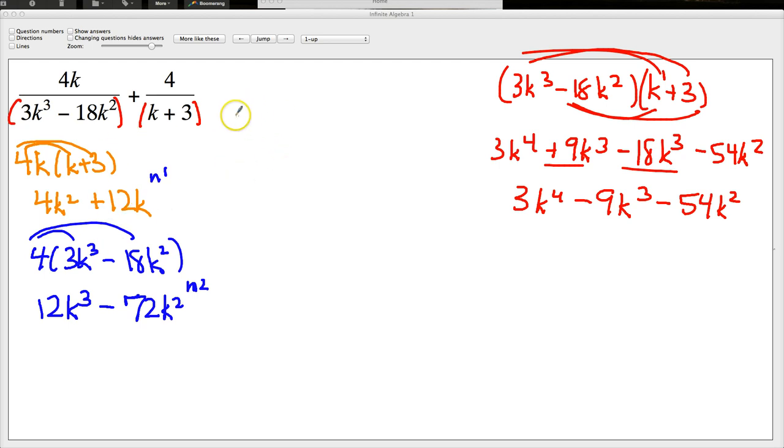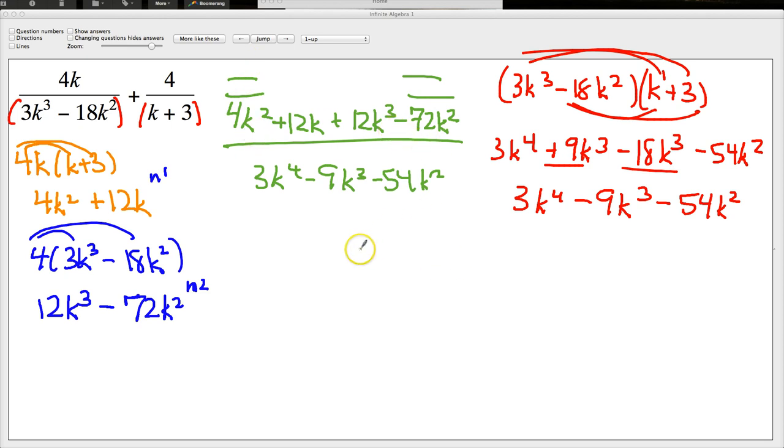And this is my denominator. So I'm going to put it all together here in the middle. And since it's an addition problem, I'll just do 4k squared plus 12k plus 12k to the 3rd minus 72k squared. It's a beast. 3k to the 4th minus 9k to the 3rd minus 54k squared. So I just need to see in the numerator, is there anything that combines? Are there any like terms? And there are. I tend to put two lines if it's a squared and three lines if it's a cubed. So 4 minus 72 is negative 68. So I end up putting it in standard form with 12k to the 3rd minus 68k squared plus 12k over 3k to the 4th minus 9k to the 3rd minus 54k squared.